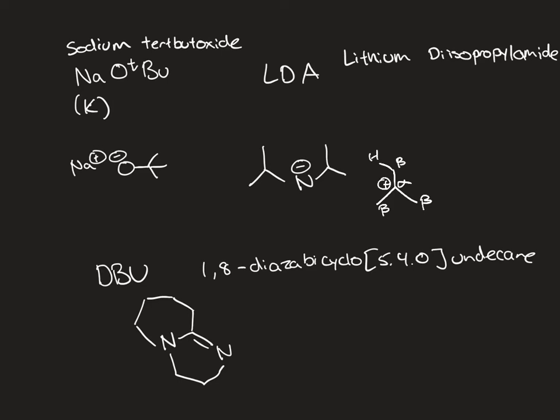Off of these beta carbons, there would be a hydrogen. And so the base would take off the H, thus forming a double bond on that certain carbon. And this is essentially the mechanism for all three of the bases.